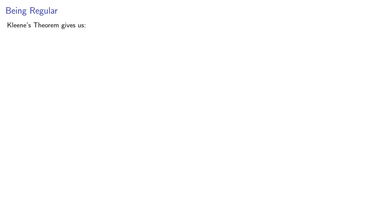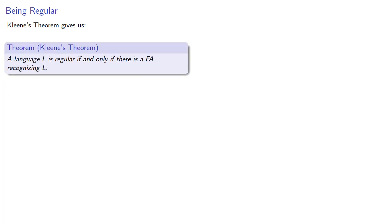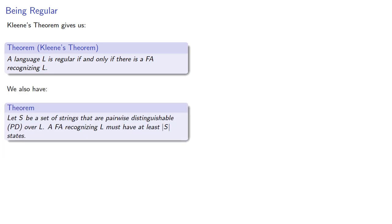The Clanner's Theorem gives us the following result: a language is regular if and only if there is a finite automaton recognizing the language. We also have the result that if we have a set that is pairwise distinguishable over our language, then a finite automaton recognizing the language must have at least that many states.